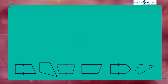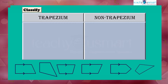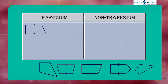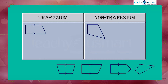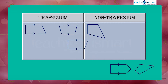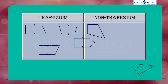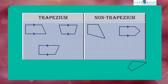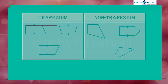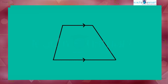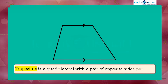Here some shapes are given — let's classify them as trapezium and non-trapezium. You have a pair of parallel sides, so you are a trapezium. Sorry, you do not have any parallel sides, you are not a trapezium. You are a trapezium. You have parallel sides but you are not a quadrilateral, so you go to non-trapezium. From this classification we can confirm that a trapezium is a quadrilateral with a pair of opposite sides parallel.